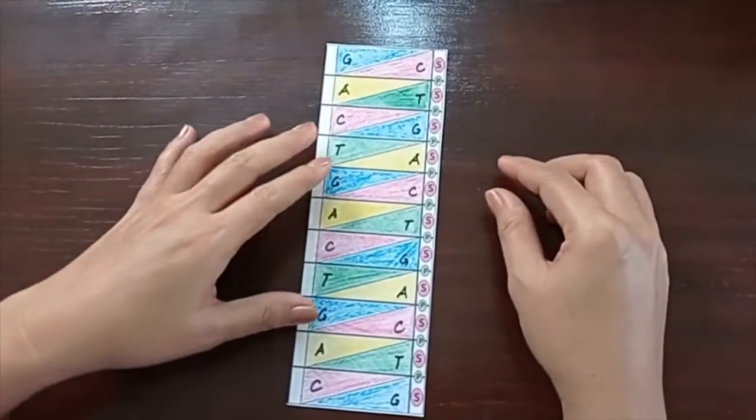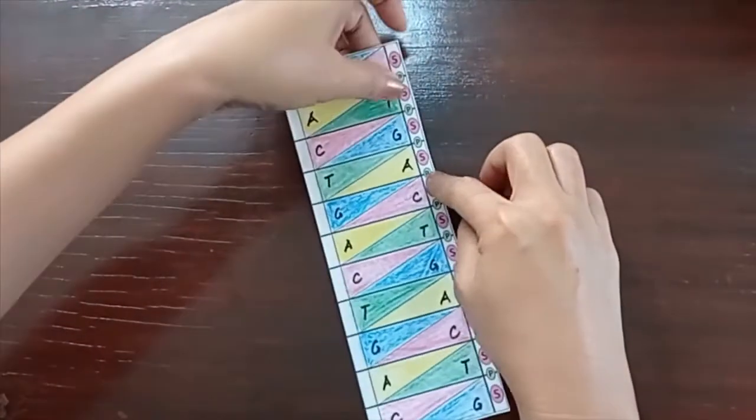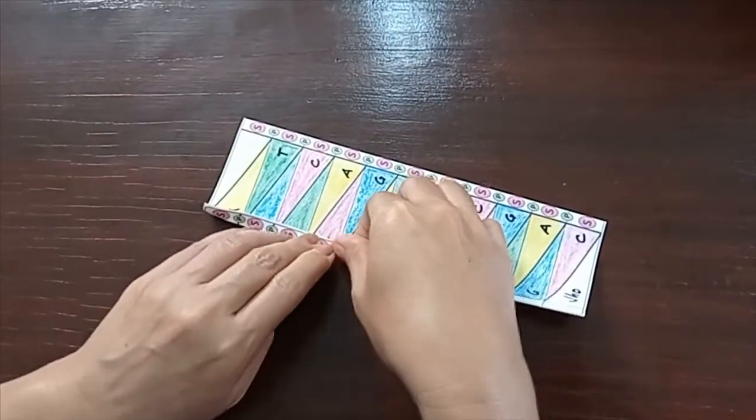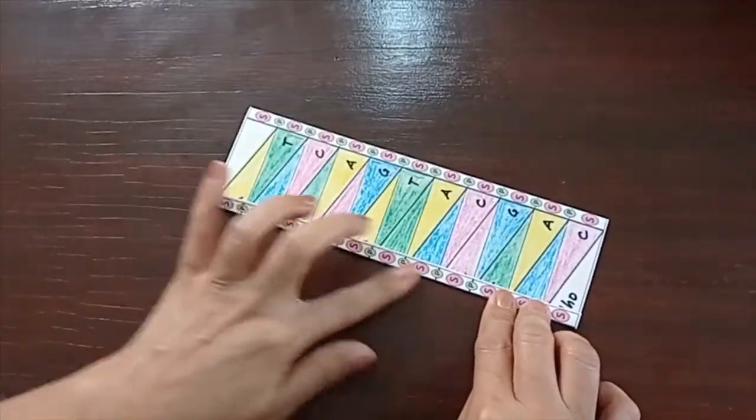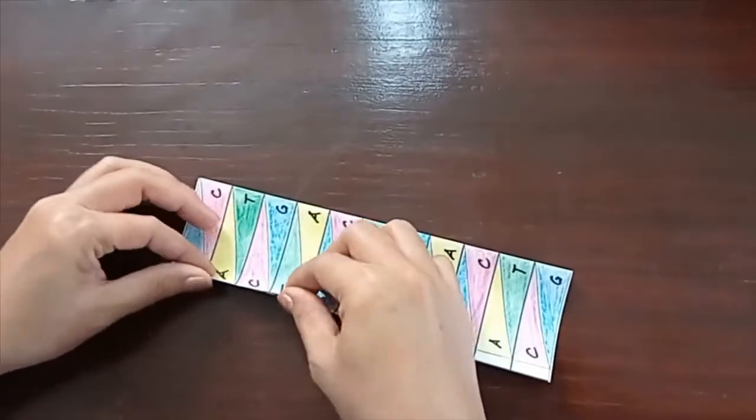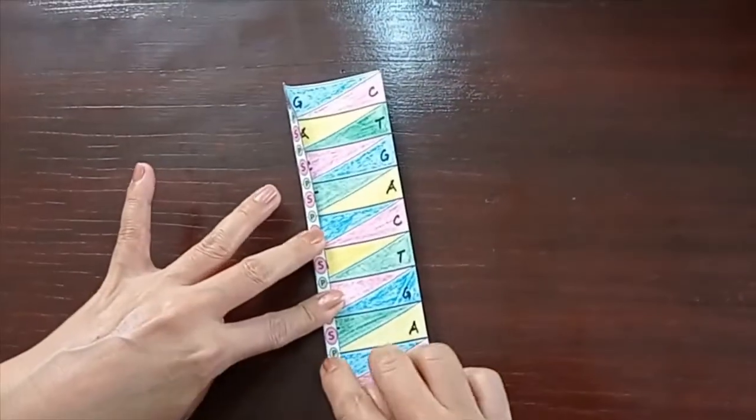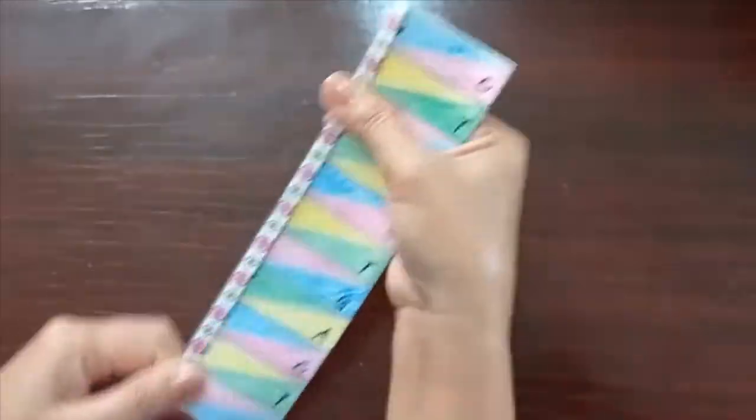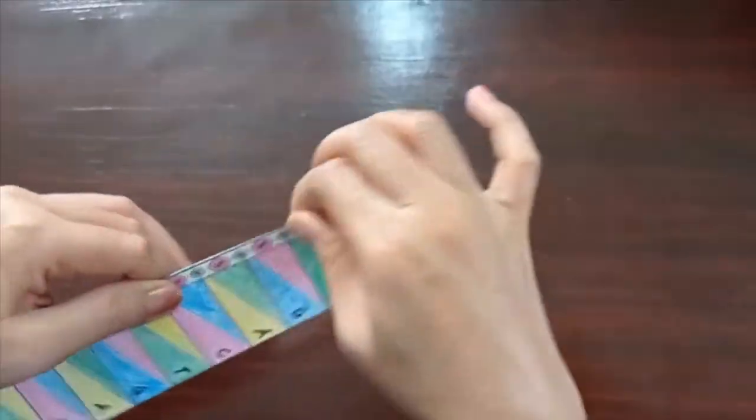Next, we fold the sides in opposite directions. So, this side and this side. We do it like this, away from us. And the other side also, away from us. So, now, this is how it looks like. Make sure to crease properly.